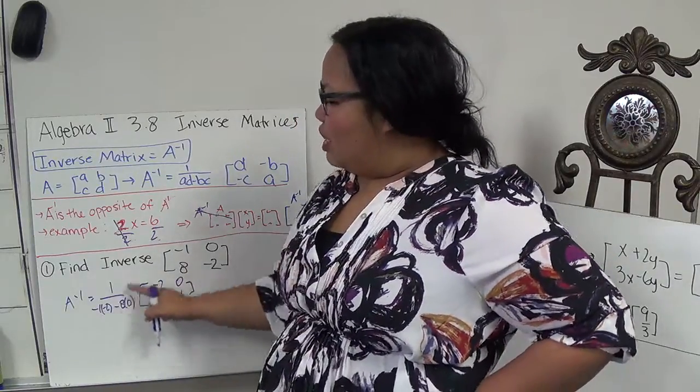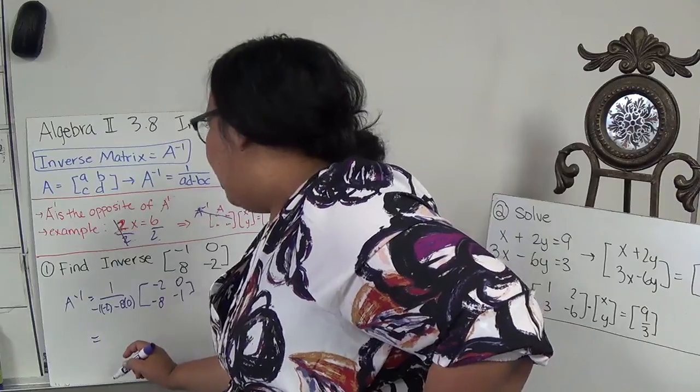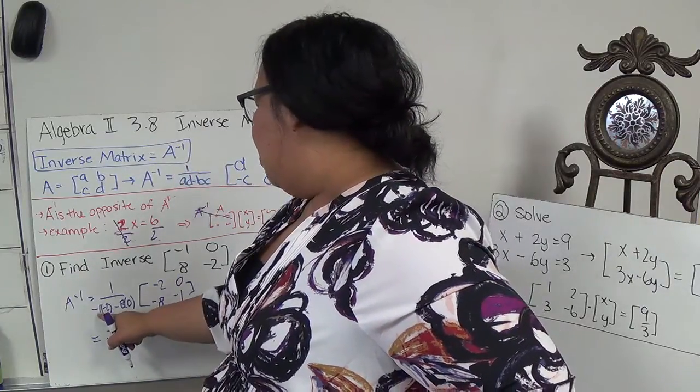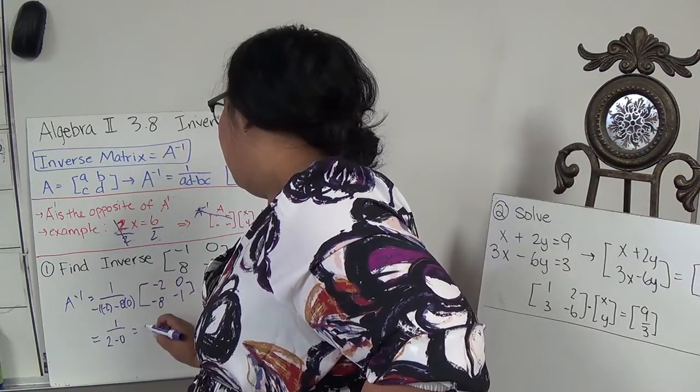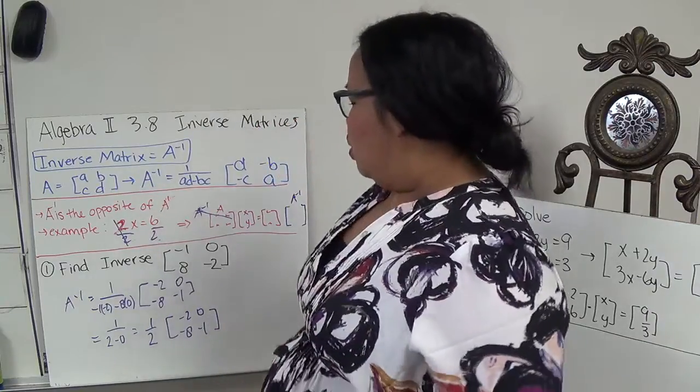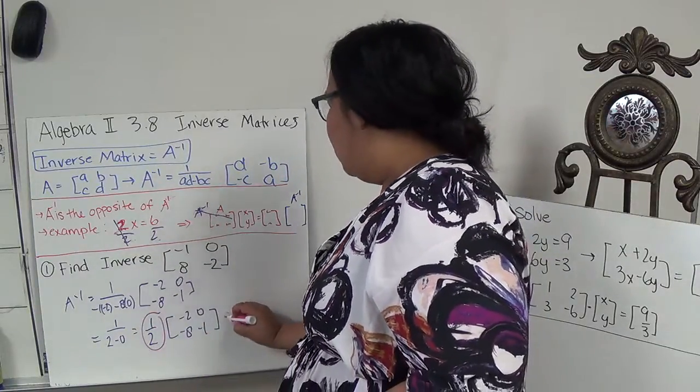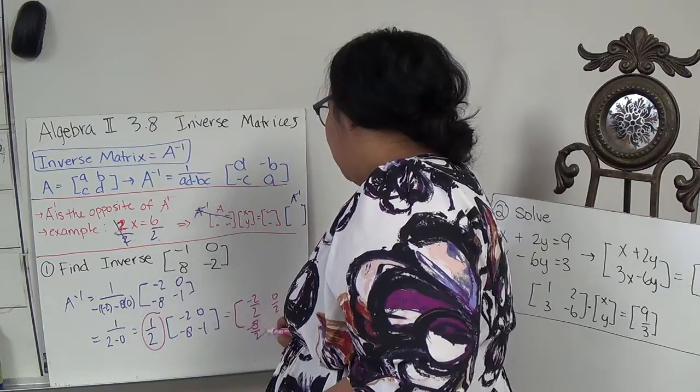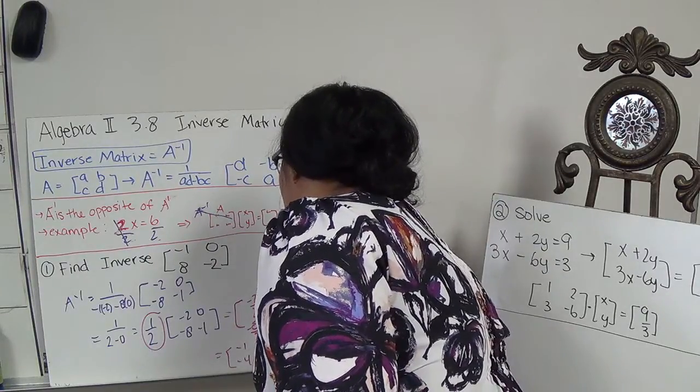So I'm going to find this number, and whatever this number is, I'm going to multiply each number by that number. So if I have negative 1 times negative 2 is positive 2, positive 2 minus 0 is 1 half. And I'm going to apply it to each one. So it's going to be negative 2 over 2, 0 over 2, negative 8 over 2, and negative 1 over 2, which then my inverse would be negative 1, 0, negative 4, and negative 1 half.